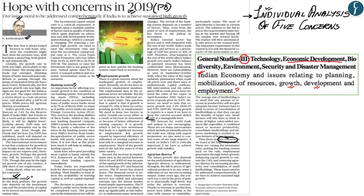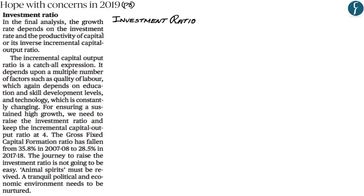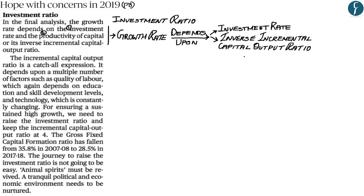The first concern raised by the author is with regards to investment ratio. To understand this, you first need to understand what is capital output ratio, then incremental capital output ratio, and then inverse incremental capital output ratio. After that, it will give you an understanding of what the author means by productivity of capital, or the inverse incremental capital output ratio.